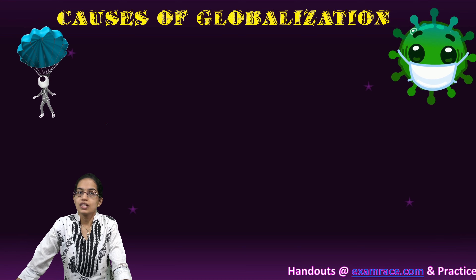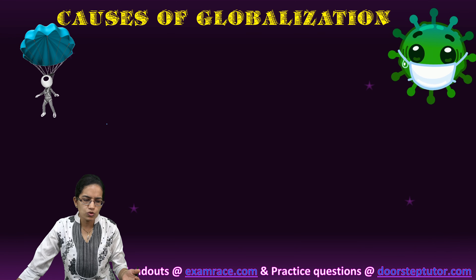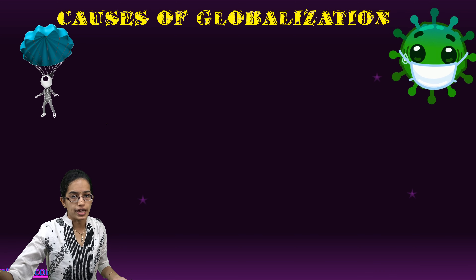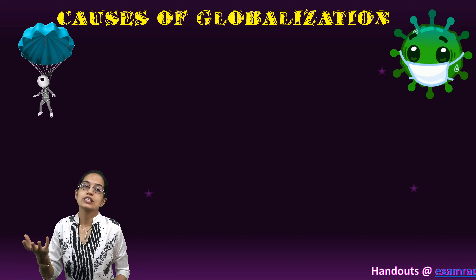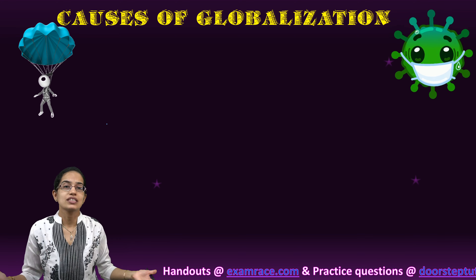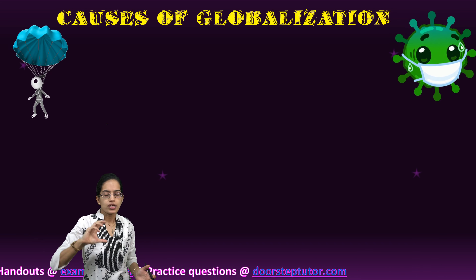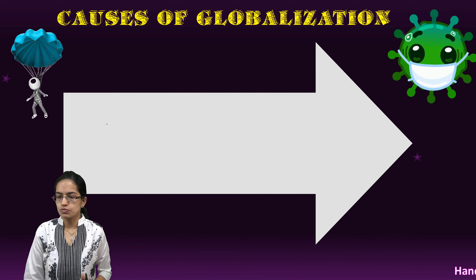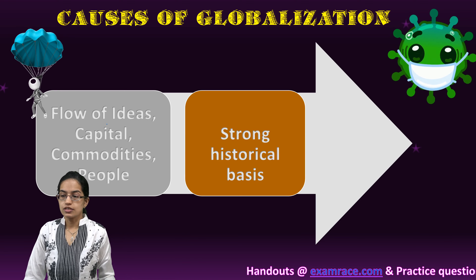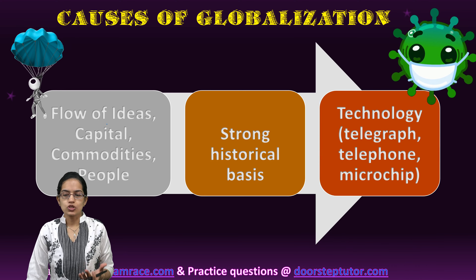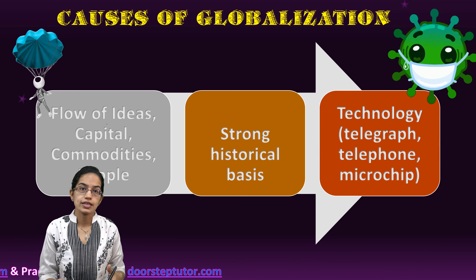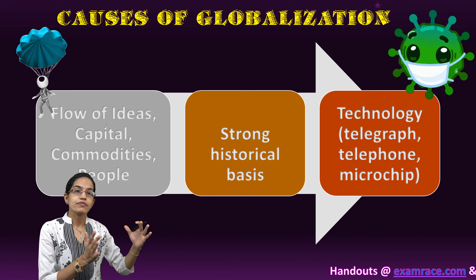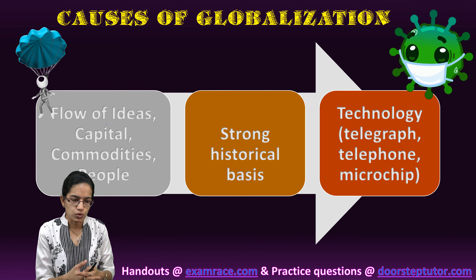To understand the causes of globalization, we need to understand movement — not just movement of people, but movement of ideas, thoughts, and movement across places. Consider COVID-19: viruses do not restrain themselves to national boundaries, so they have globalized. Every country saw COVID cases. The causes of this movement include the movement of ideas, initially rooted in strong historical bases that have been homogenized with the advent of communication technology — telephone, telegraph, microchips, computing, and the internet.